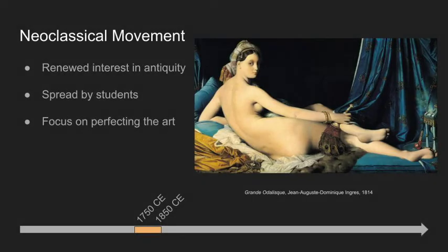The neoclassical movement is symbolized by another obsession with the classics, similar to the surge which ignited the Renaissance just a few centuries earlier. Artists perfected their art by practicing restraint with smooth contours and indiscernible brush strokes. This movement was spread by young aristocrats as they undertook the grand tour to finish their education by visiting Paris, Venice, Florence, and Rome.